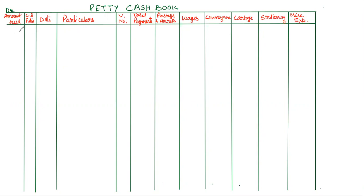On the debit side, there will be one column of amount received, after that cash book folio, then a column of date, and after that particulars — in this column we will write all the descriptions. Then there will be a column of voucher number, one column of total payments, and then detail of payments like postage and couriers, wages, conveyance, cartage, stationery, and miscellaneous expenses. We will create these small heads like postage and courier, wages, and conveyance according to our requirement.